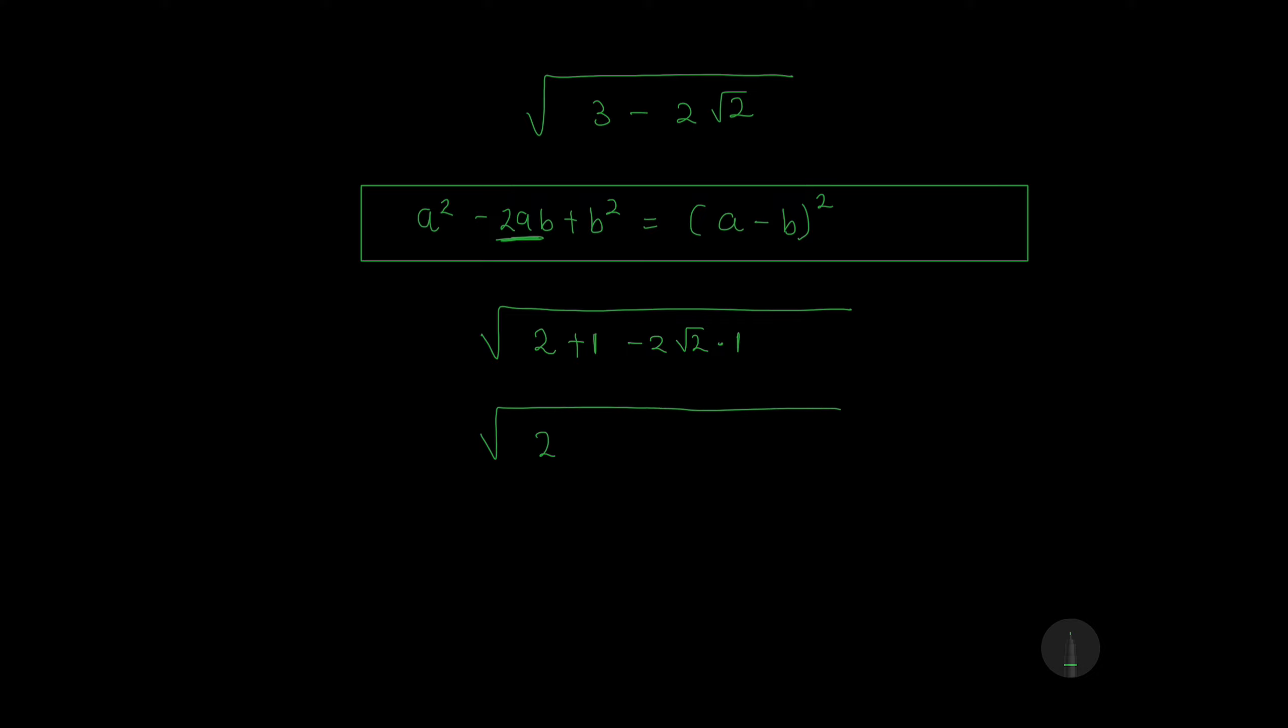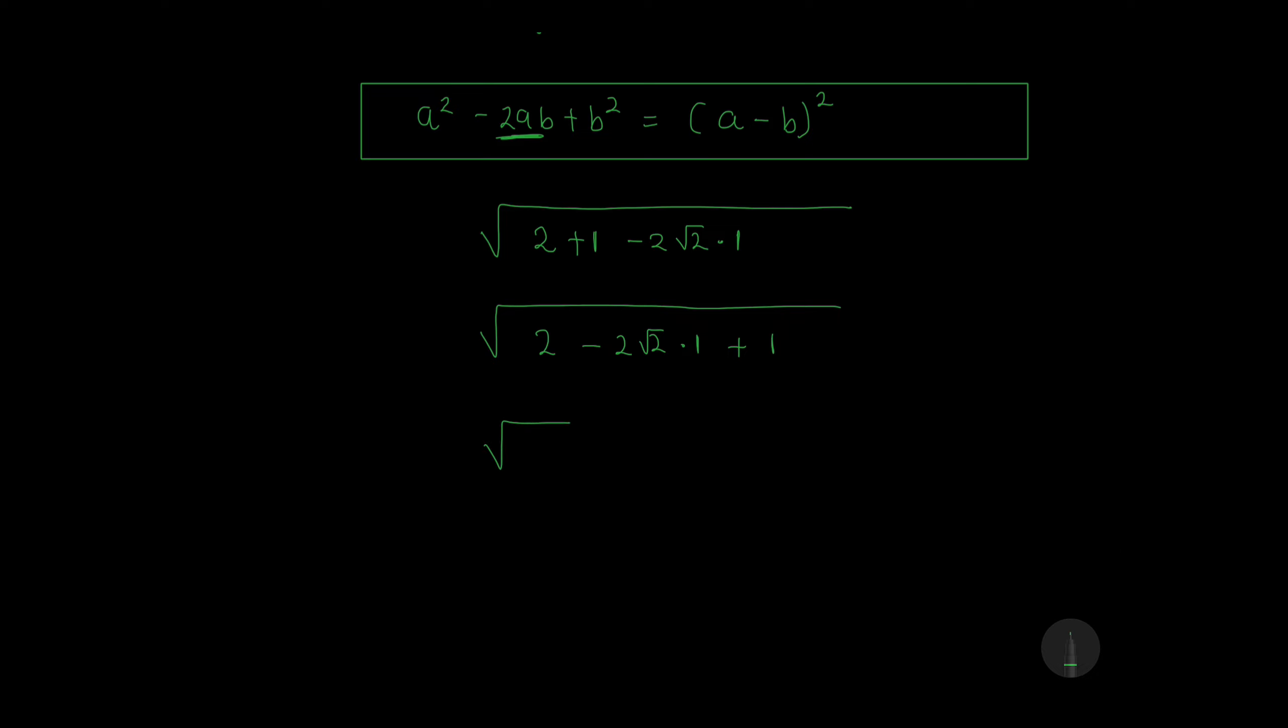So 2 will be our a², and we'll have minus 2 square root of 2 multiplied by 1, and 1 will be our b². So this will be a, which is square root of 2, minus b, which is 1, squared.